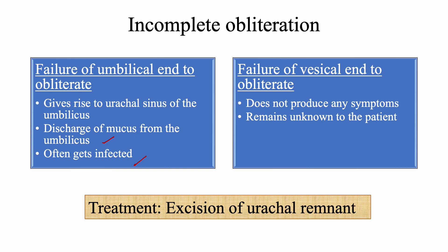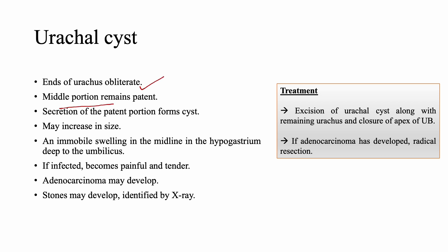The treatment of incomplete obliteration is excision of the urachal remnant. Regarding the urachal cyst: the middle portion remains patent, and secretions from this patent portion form a cyst that may increase in size. An immobile swelling in the midline in the hypogastrium deep to the umbilicus can be felt. If infected, it becomes painful and tender. Adenocarcinoma may later develop, and stones may also form within the urachal cyst. Management is excision of the urachal cyst along with the remaining urachus and closure of the apex of the urinary bladder; if adenocarcinoma has developed, radical resection is required.